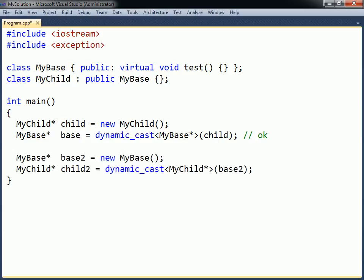The next example attempts to convert a MyBase pointer to a MyChild pointer. Since the base object does not contain a complete child object, this pointer conversion will fail. To indicate this, the dynamic cast returns a null pointer. This gives a convenient way to check whether or not a conversion has succeeded during runtime.